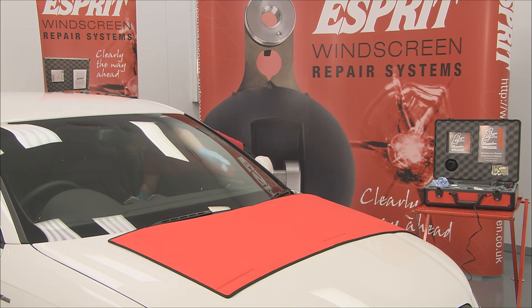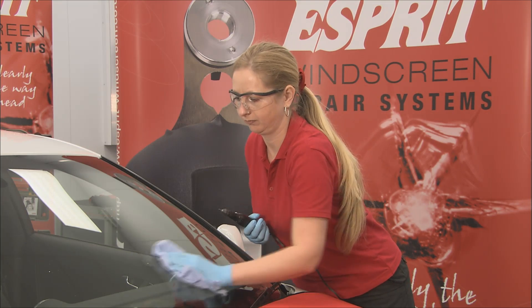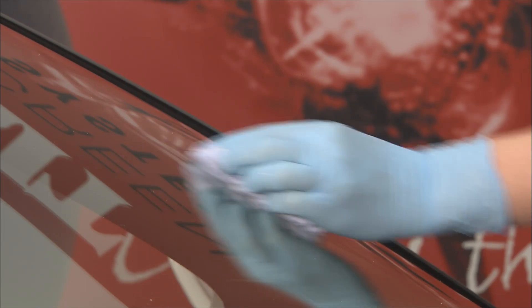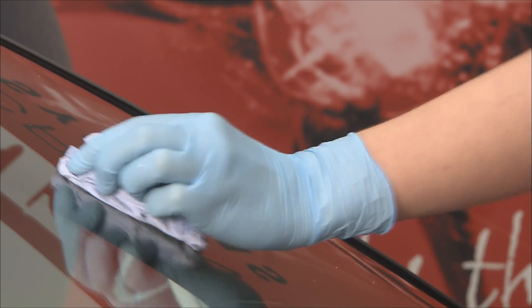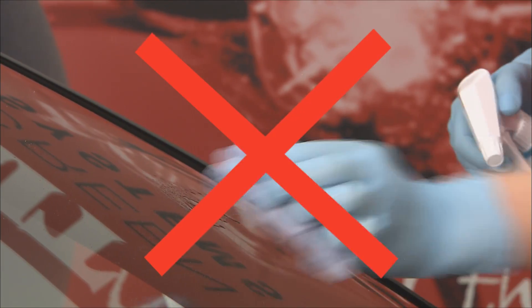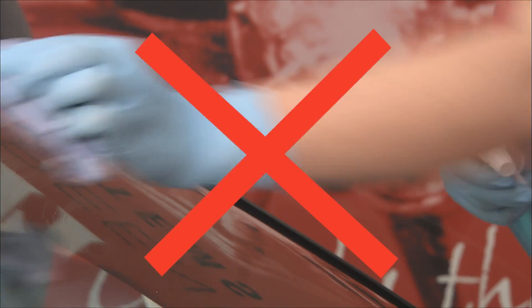It's important that the inside and outside of the screen are thoroughly cleaned with a dry cloth before using any repair materials. Windscreen cleaners must not be used because they could penetrate through the damaged area and attack the polyvinyl layer in the centre of the glass.